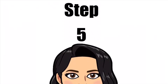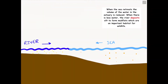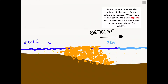Step five in the formation of an estuary concerns the water. When the sea retreats or moves back out into the ocean, the volume of water in the estuary is reduced. When there is less water, the river will deposit silt to form mud flats, which grow and establish an important habitat for wildlife.